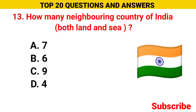How many neighboring countries of India share both land and sea borders? Option A 7, option B 6, option C 9, option D 4. The correct option is option C, 9.